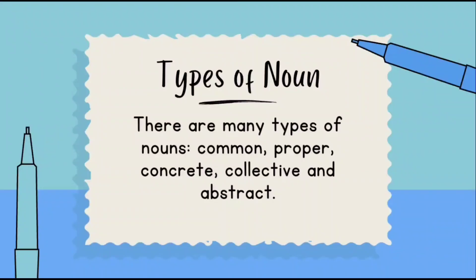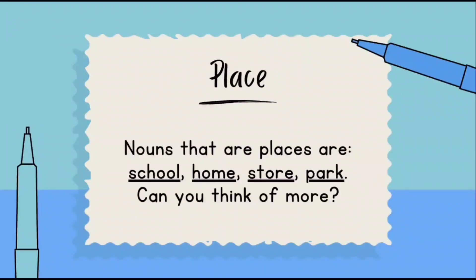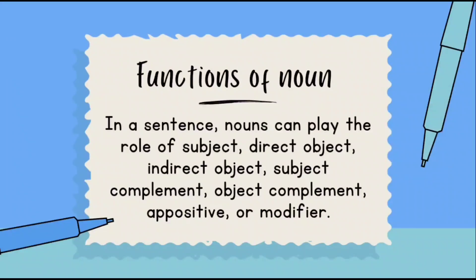Types of noun: there are many types — common, proper, concrete, collective, and abstract. We are not going deeper into these because these are the structural parts we have already learned. Person nouns are people: boy, girl, teacher, doctor. Place nouns are places: school, home, store, park. Thing nouns are things: chair, pen, ball, clothes — there are so many nouns used to talk about things.